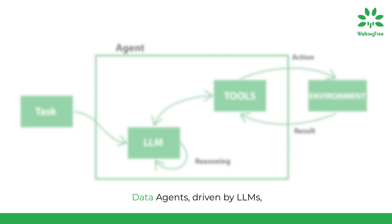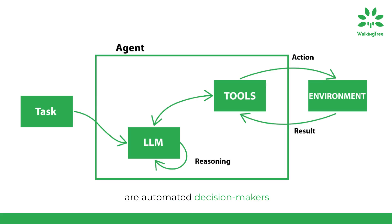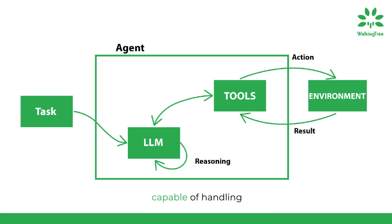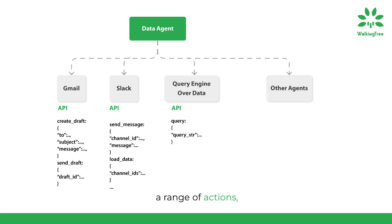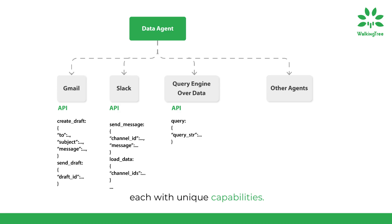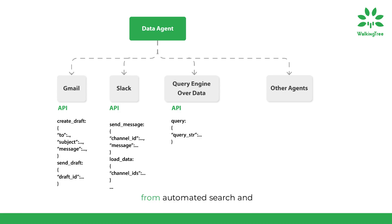Data agents, driven by LLMs, are automated decision makers equipped with a toolkit. They dynamically decide optimal sequences of actions, making them versatile and capable of handling complex tasks. Data agents in LlamaIndex are intelligent LLM-powered knowledge workers. They can read and write data, enabling them to perform a range of actions, from retrieval to API interactions. These agents leverage a curated toolset, enhancing their capabilities and enabling a wider range of actions, from automated search and retrieval to calling external service APIs and processing responses.